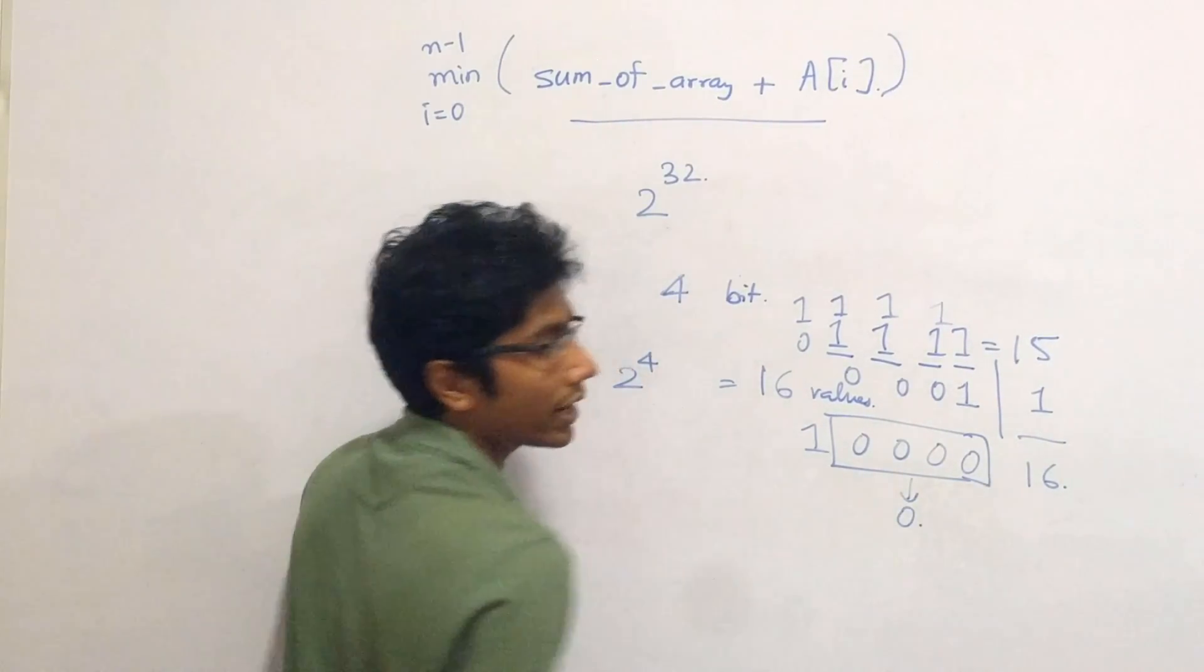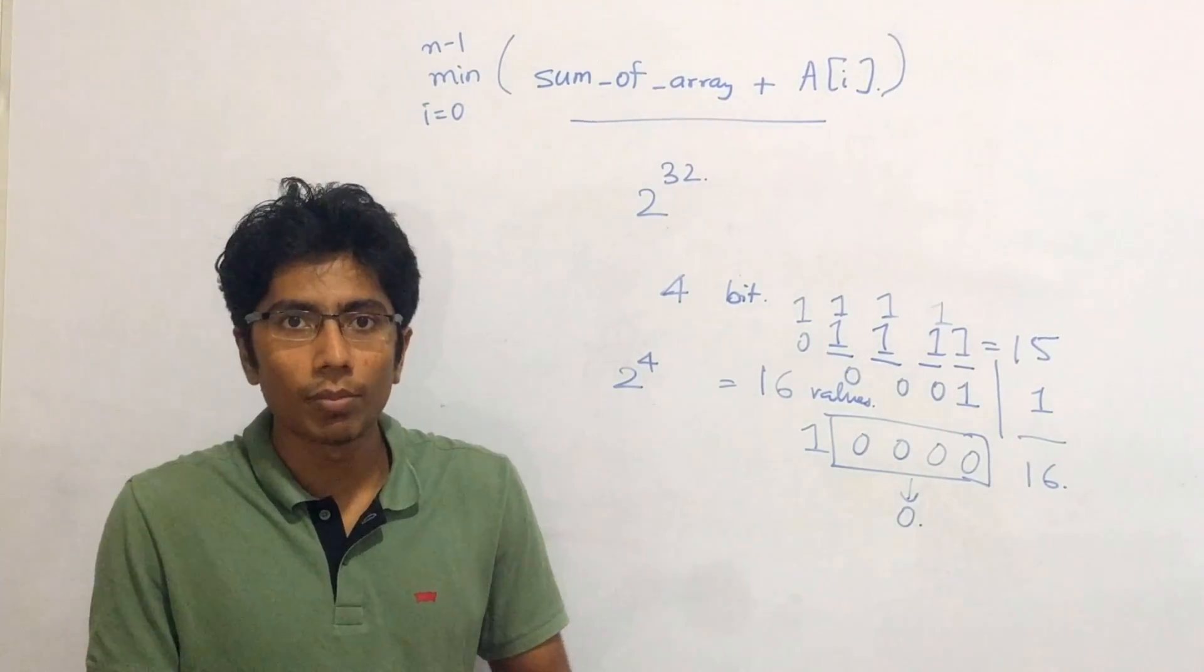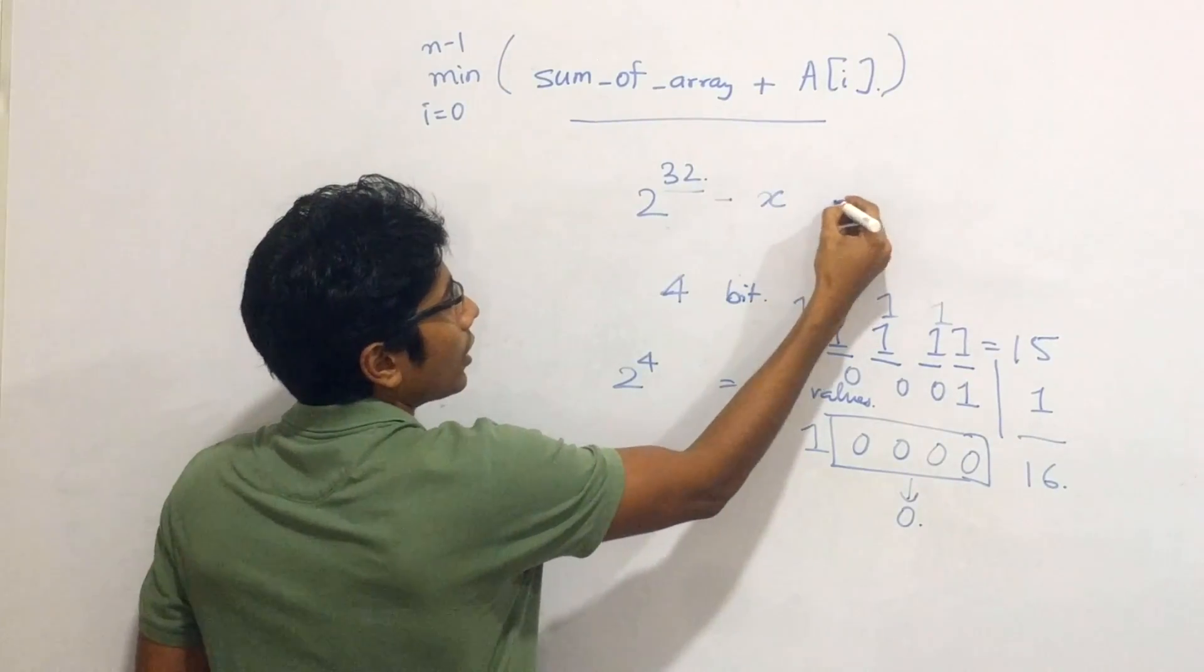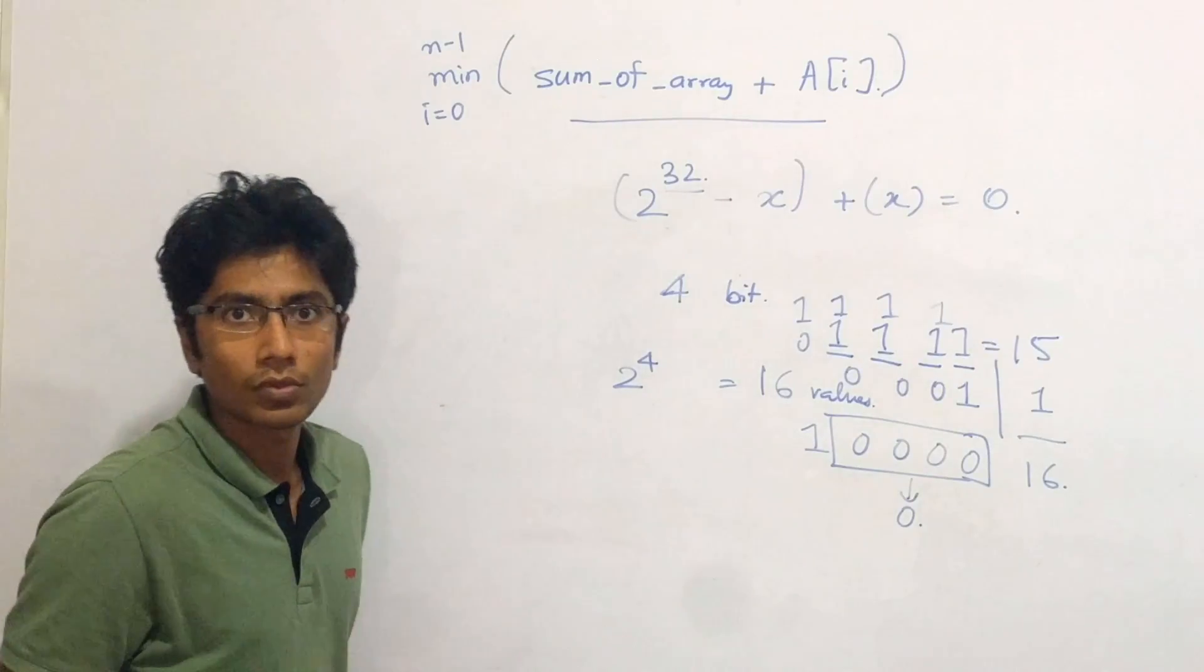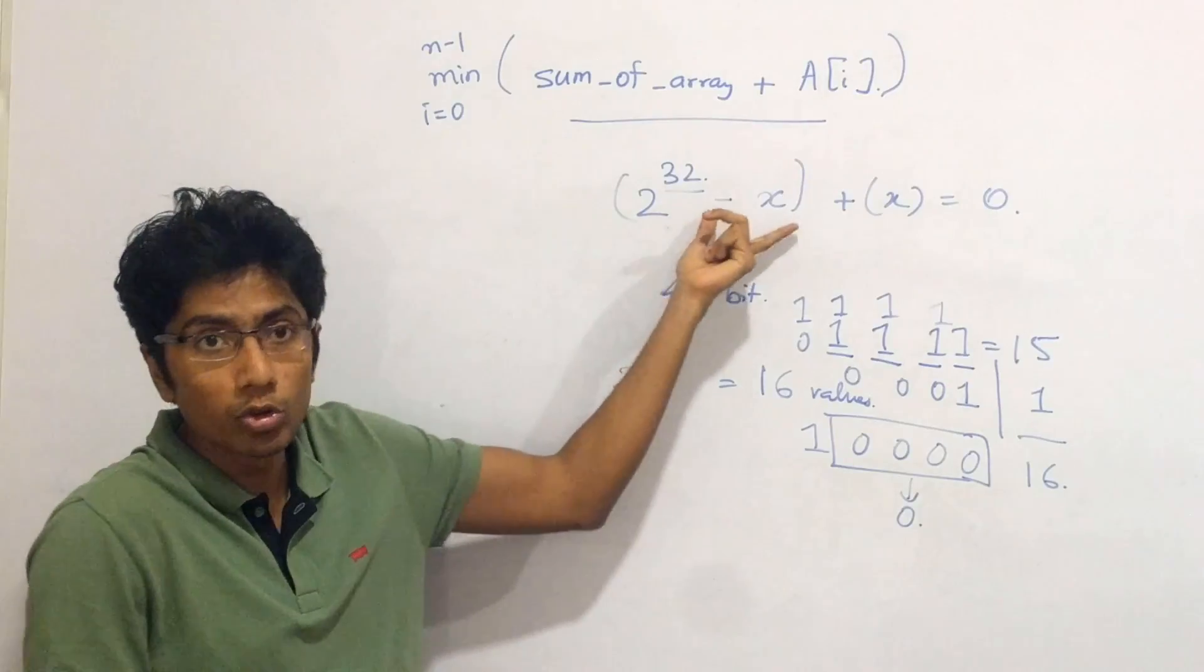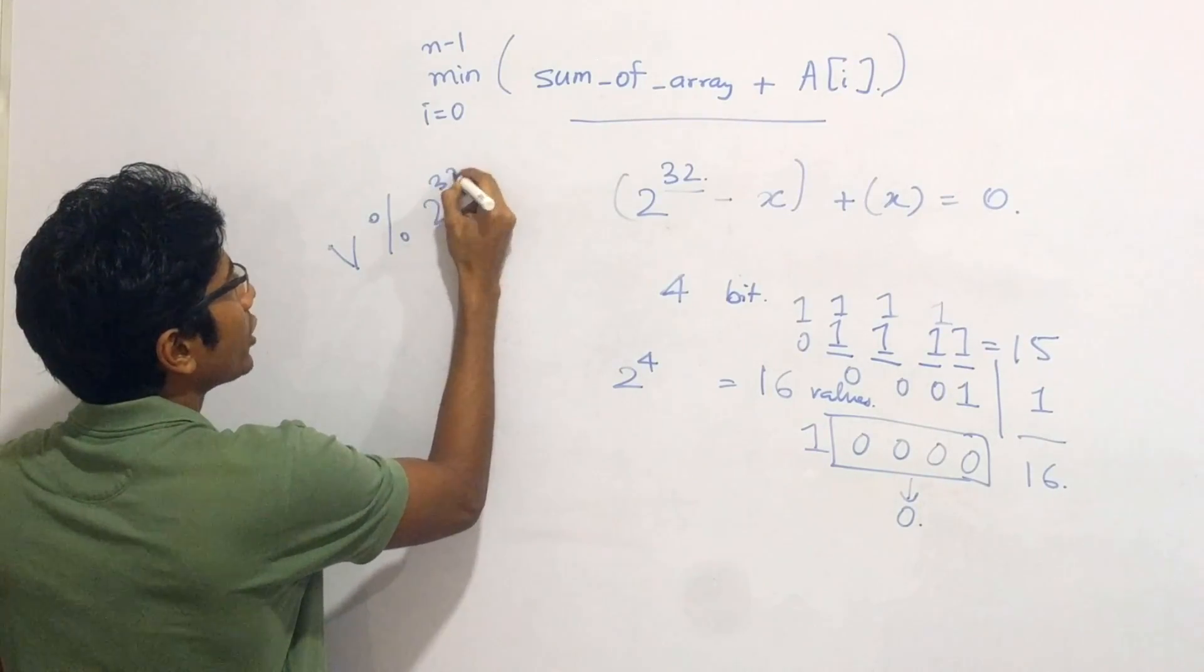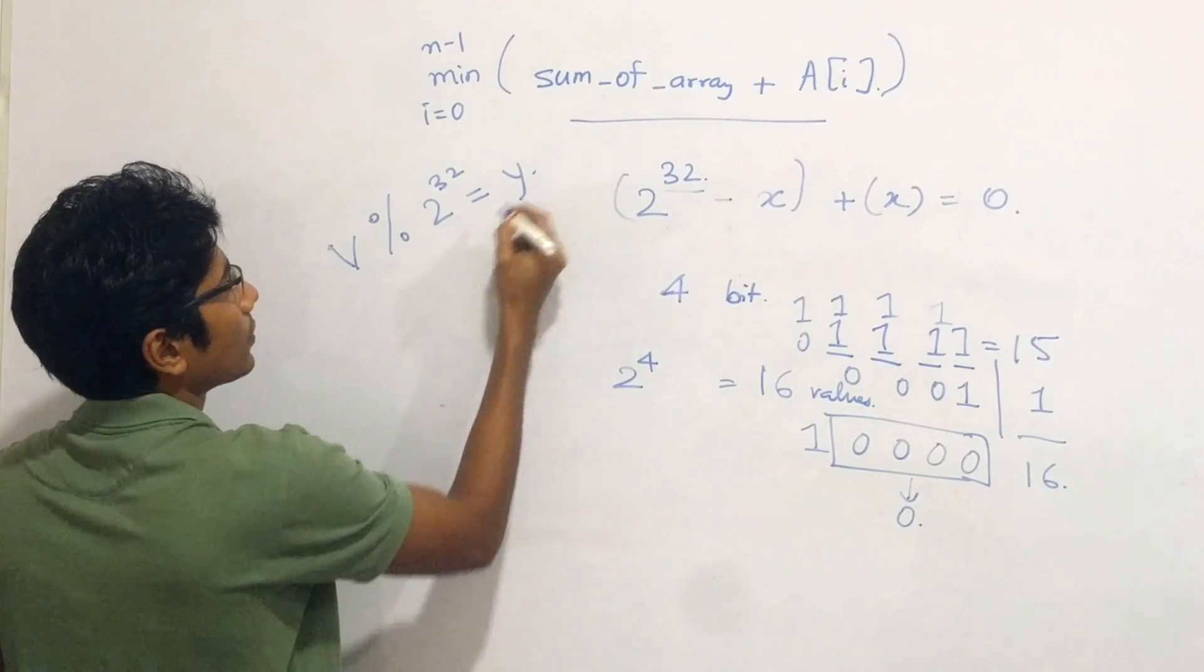And this is for any data type, depending on the number of bits it contains. So at 32, what's going to happen is if you have 2 raised to power 32 minus 1, or 2 raised to power 32 minus x, let's say, plus x, what you end up with is 0. So essentially whatever value you add, whatever value you have, let's call that value v, it's being divided by 2 raised to power 32, and the remainder is being taken. So that's what you are getting.